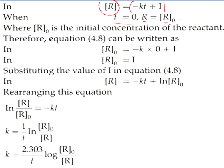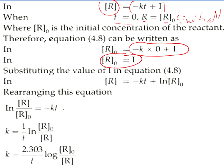For the first order reaction, we take time zero and the initial rate of reaction r₀ as the initial reactant. So r₀ becomes i. Equating this equation and taking logarithm, we get the first order reaction equation. You can write this equation in your copy — it is the first order reaction rate equation.